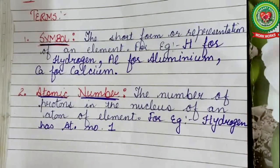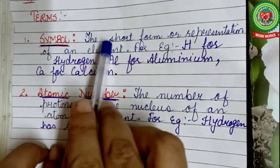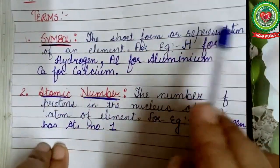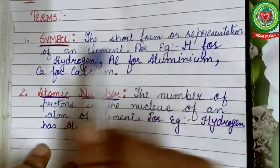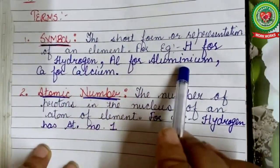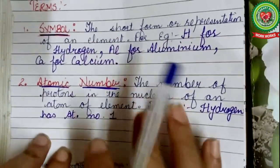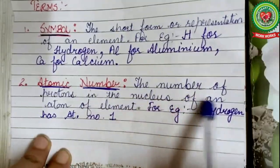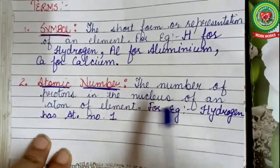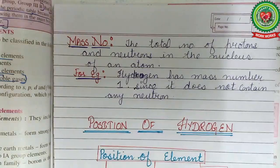Two important terms: first, symbol — the short form or representation of an element; for example, H stands for hydrogen, Al stands for aluminium, and Ca stands for calcium. Second, atomic number — the number of protons in the nucleus of an atom; for example, hydrogen has atomic number 1. For mass number, since hydrogen does not contain any neutron, only the number of protons is considered.